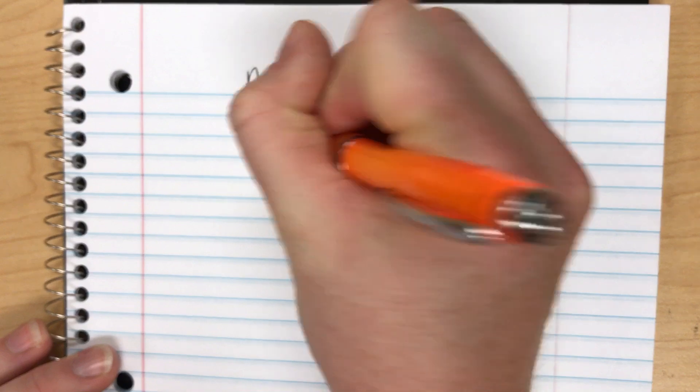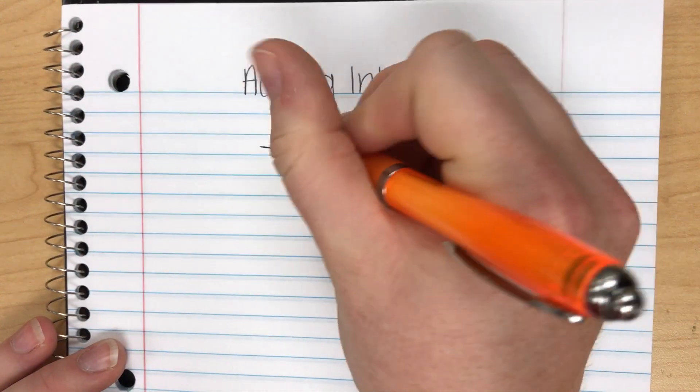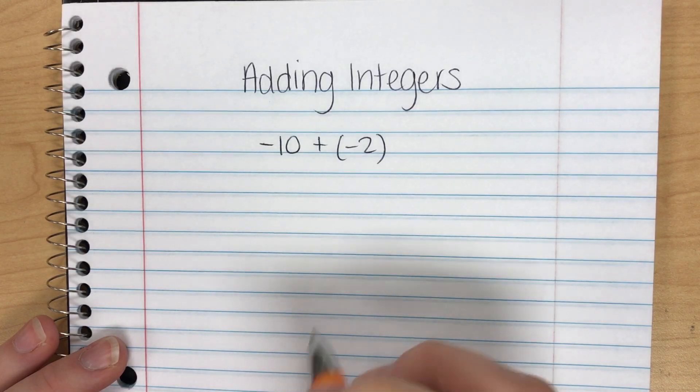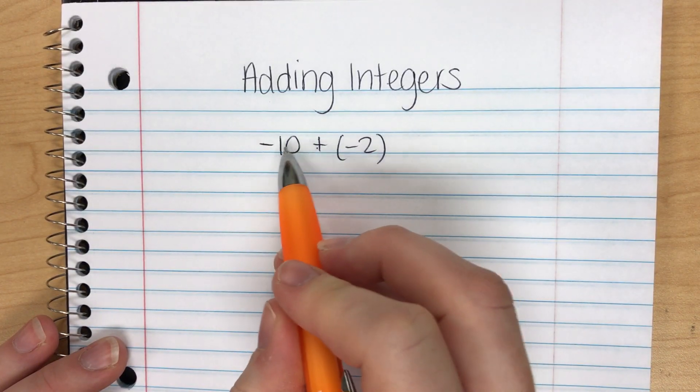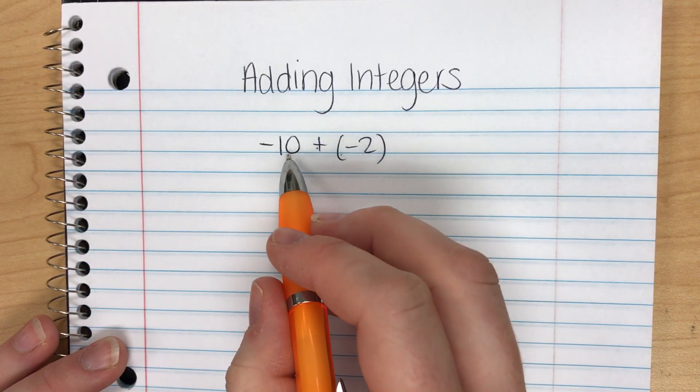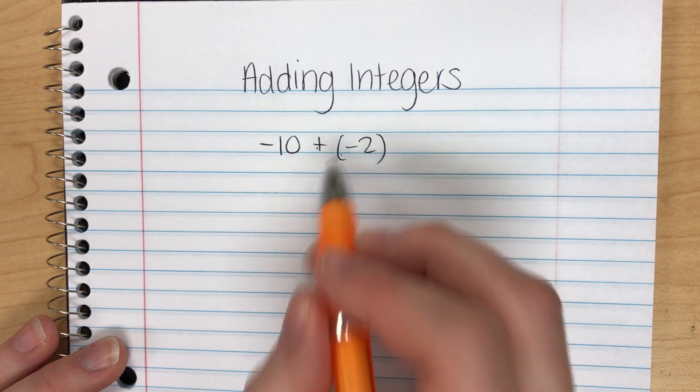First let's talk about adding same signs. Let's say I have negative 10 plus negative 2. First I realize this is an addition problem and my signs are the same. What I'm going to do first is take the absolute values of negative 10 and negative 2.